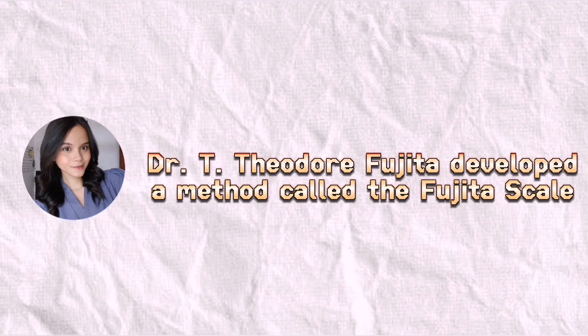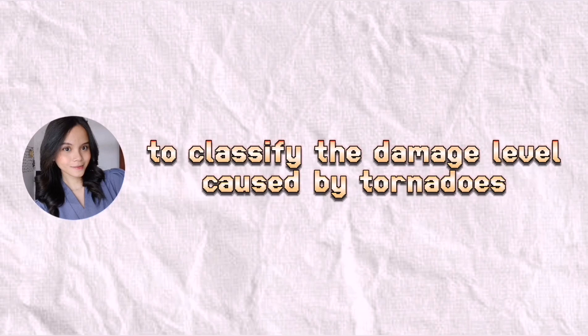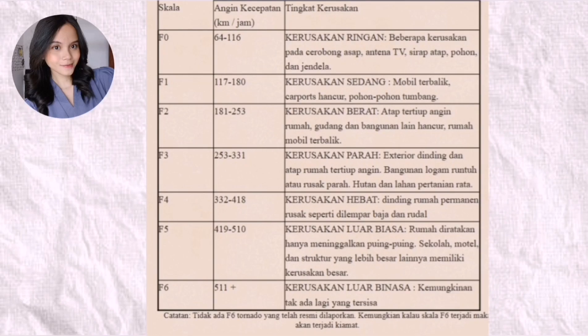Dr. Theodore Fujita developed a method called the Fujita Scale to classify the damage level caused by tornadoes. F0 scale with wind speeds of 64 to 116 km/h has light damage. F1 scale with wind speeds of 117 to 180 km/h has moderate damage. F2 scale with wind speeds of 181 to 253 km/h has severe damage.